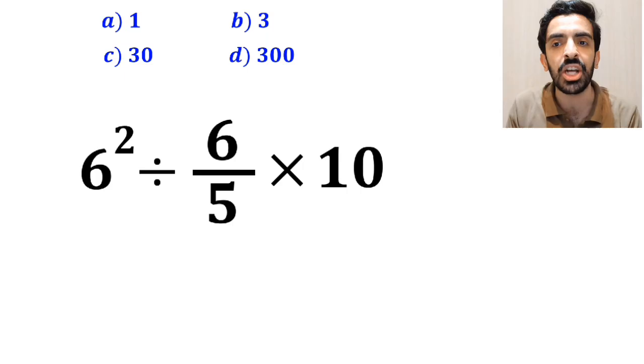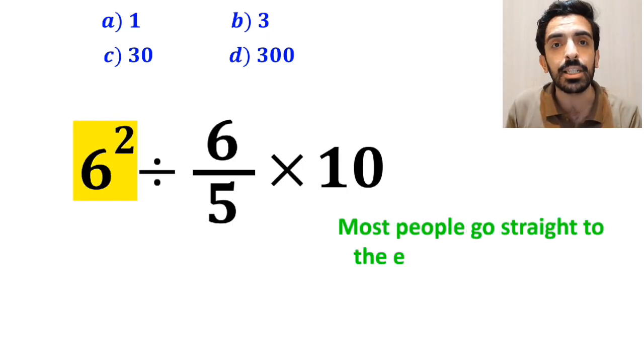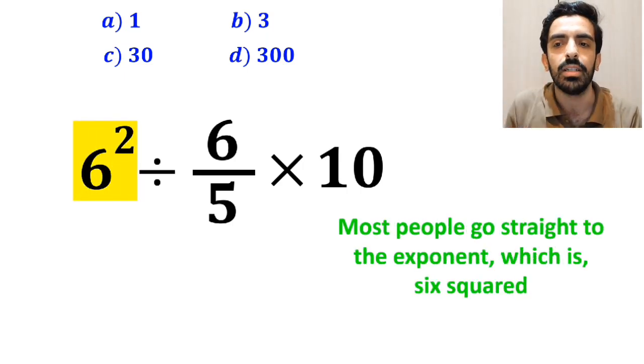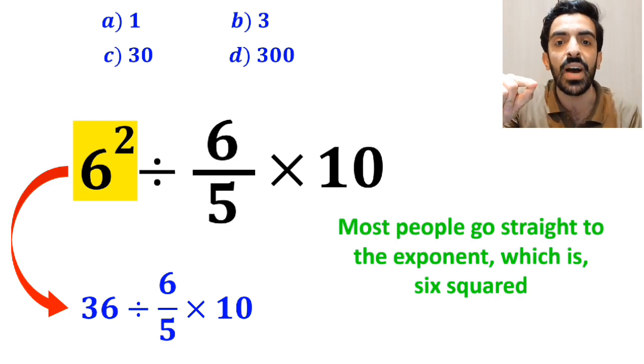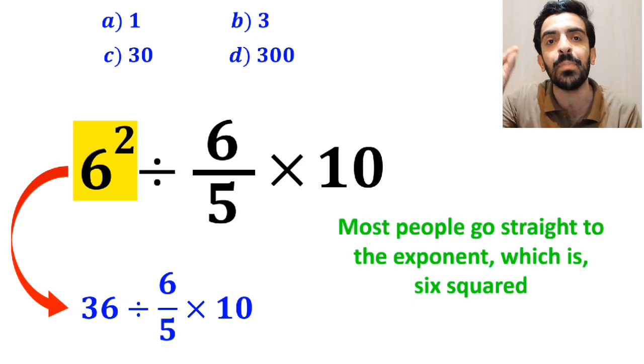The first step to solve this question, most people go straight to the exponent, which is 6 squared, and they write this expression as 36 divided by 6 over 5 then multiply by 10.